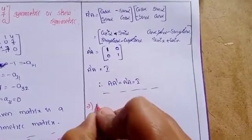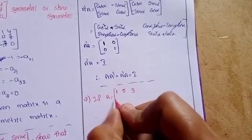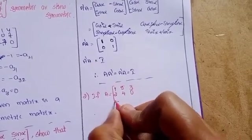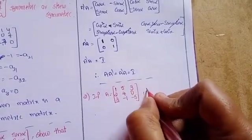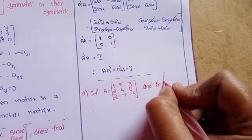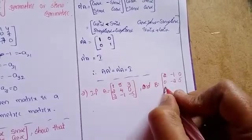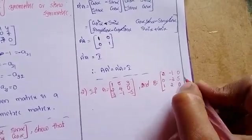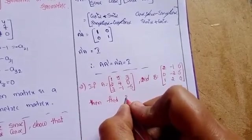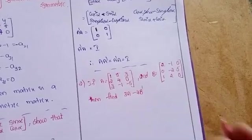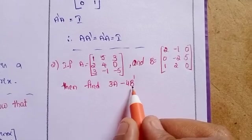Second question: If A equals the 3×3 matrix with entries 1, 5, 3, 2, 4, 0, 3, minus 1, minus 5, and B equals the 3×3 matrix with entries 2, minus 1, 0, 0, minus 2, 5, 1, 2, 0, then find 3A minus 4B transpose. Note that this involves 4B transpose, not B.